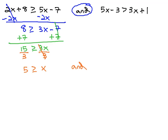And for the second inequality, 5x minus 3 is greater than 3x plus 1. We'll move the variable to one side by subtracting 3x from both. This gives us 2x minus 3 is greater than 1.